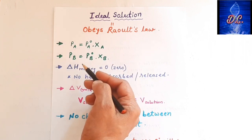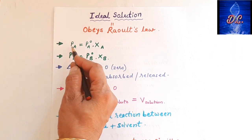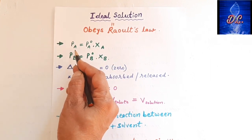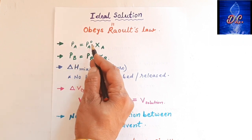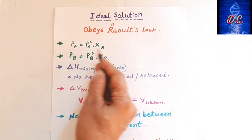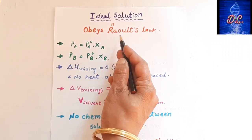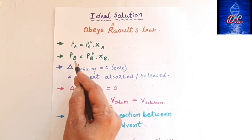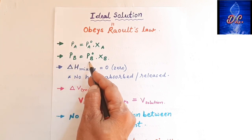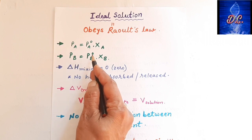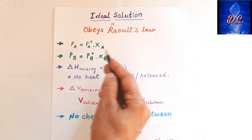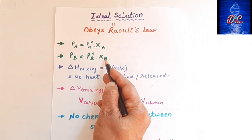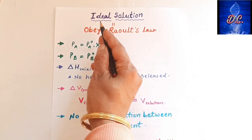Now let's talk about some characteristics of Ideal Solution. The first is PA = PA0 × XA. If A component is volatile, that equals the vapor pressure in pure state multiplied by its mole fraction — which is the mathematical expression of Raoult's Law. For B component, similarly, PB = PB0 × XB, meaning the vapor pressure of B equals the vapor pressure of B in pure state multiplied by its mole fraction. If we follow this equation at all temperatures and concentrations, we call it an Ideal Solution.